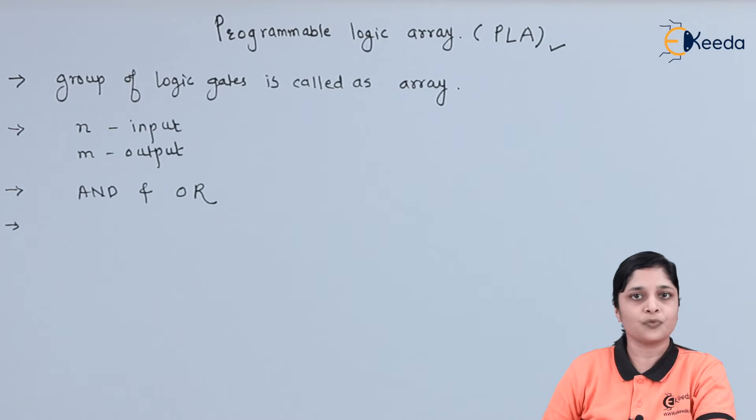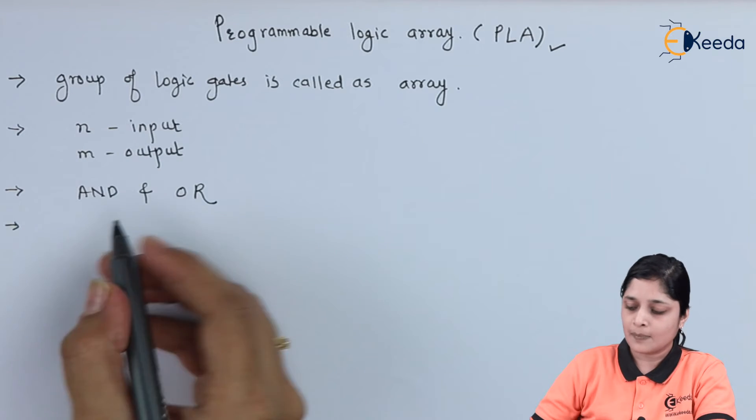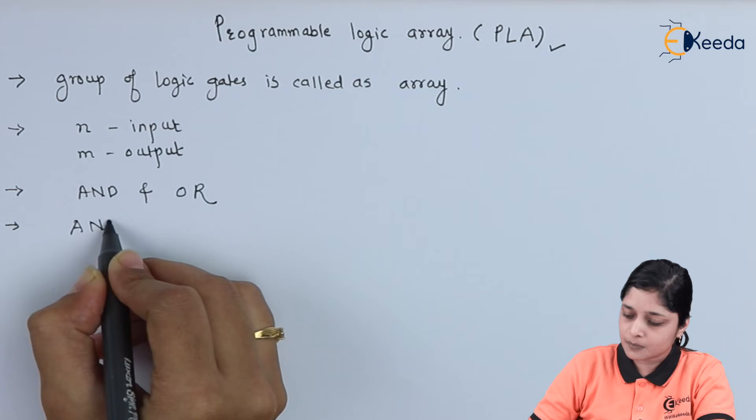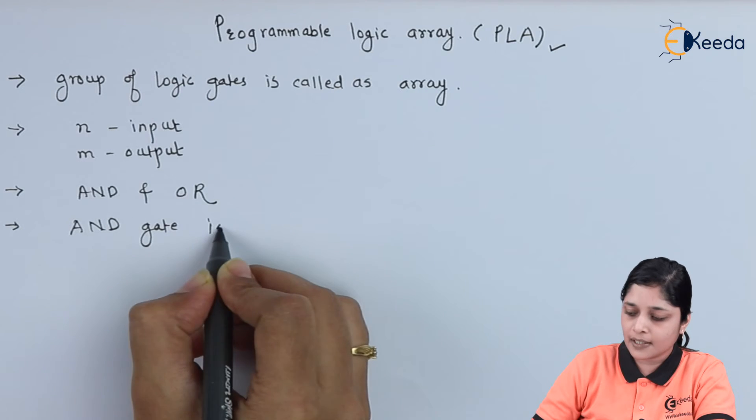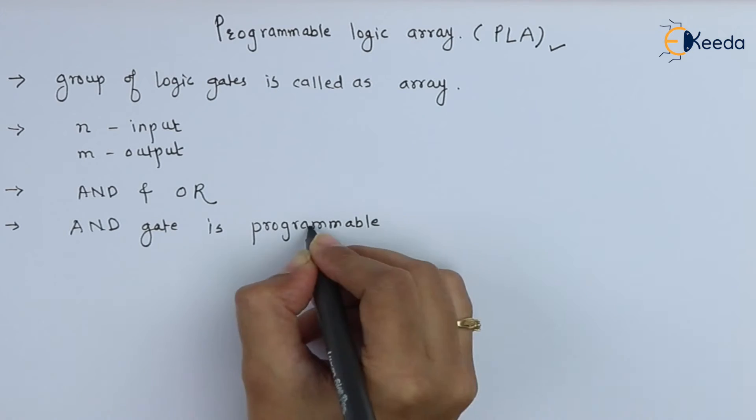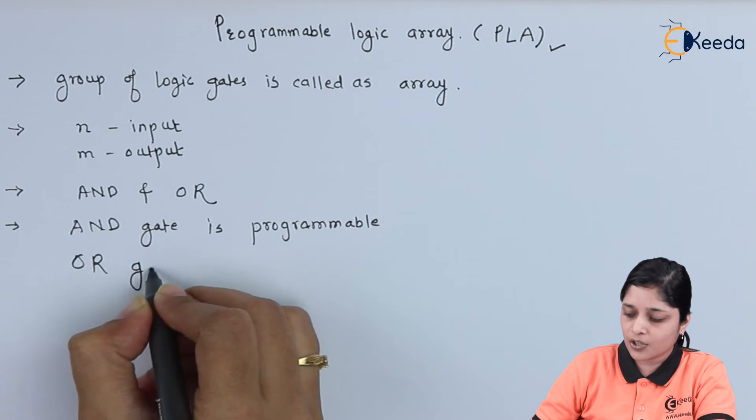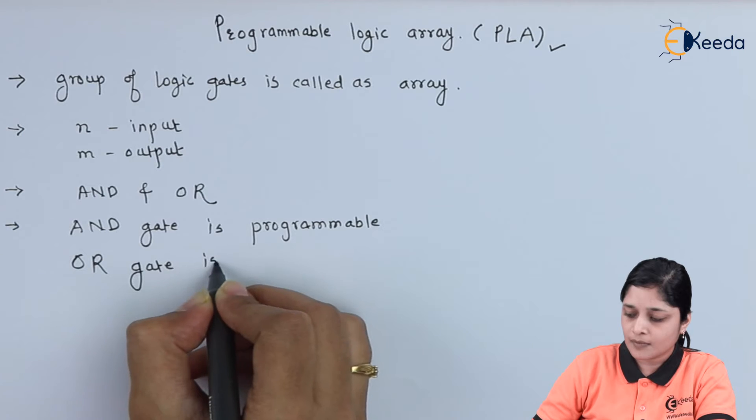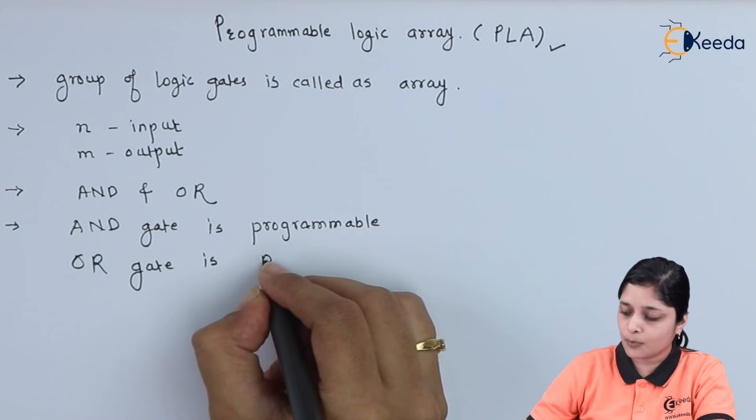This is the most important feature of PLA. So, we will write here, AND gate is Programmable and OR gate is again Programmable.